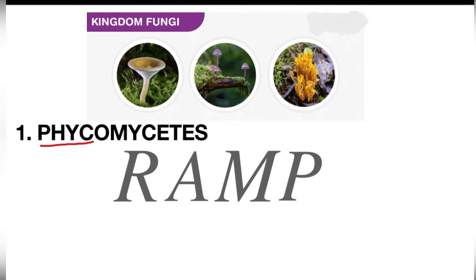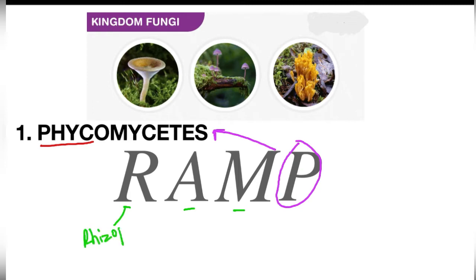For the first group, our trick is RAMP — like a ramp walk in a fashion show. RAMP: R is Rhizopus, A is Albigo, M is Mucor. Albigo is a parasitic fungus that grows on mustard — important for NEET. Rhizopus is known as common bread mold — also important for NEET.